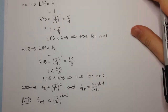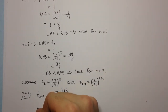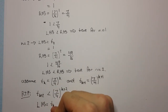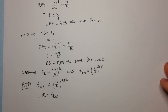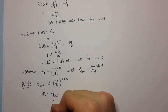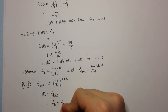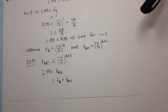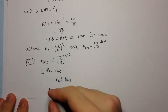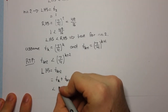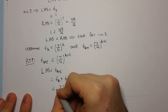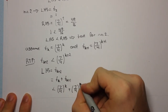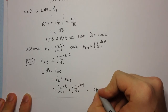Let's have a look at the left-hand side. The left-hand side is equal to t_{k+2}. By definition, t_{k+2} is t_k plus t_{k+1}. Now we can use our assumptions and say that this is less than (7/4)^k plus (7/4)^{k+1}, since t_k < (7/4)^k and t_{k+1} < (7/4)^{k+1}. This is by assumption.